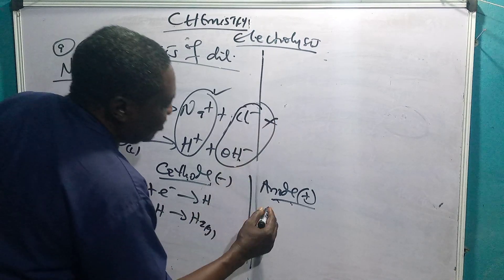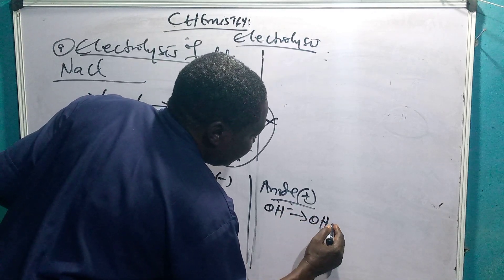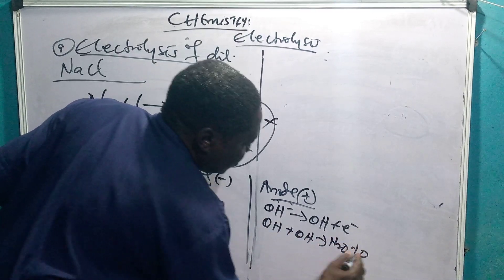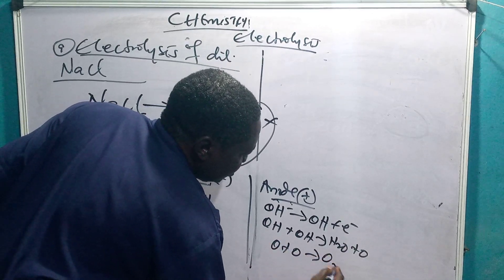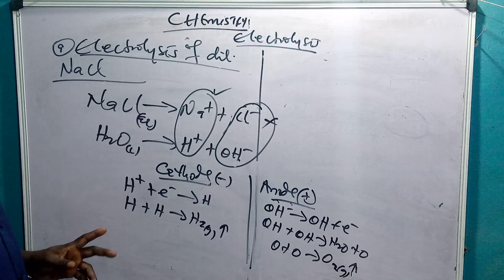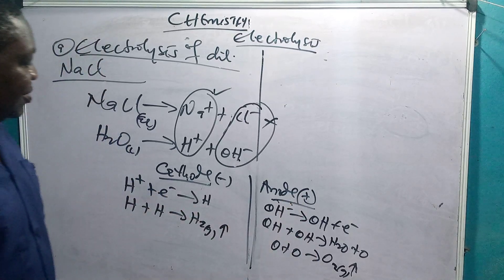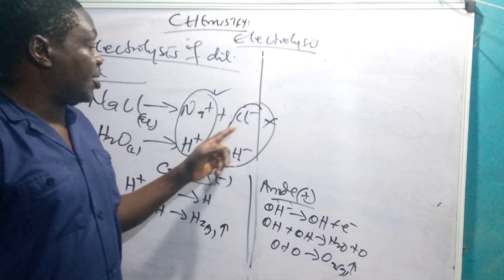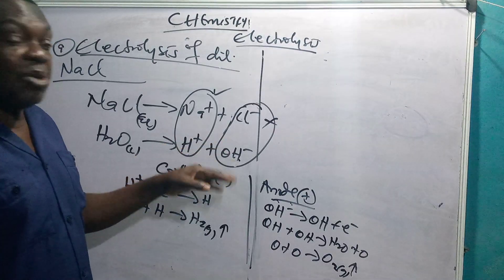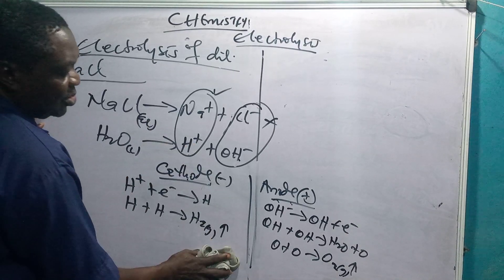Because the chloride ion concentration is insufficient, OH⁻ is discharged at the anode instead. OH⁻ loses its single electron and combines with another OH to form H₂O plus O, or combines in pairs to give O₂ gas, which is also given off. So in this dilute solution, hydrogen is discharged at the cathode and oxygen is discharged at the anode. The solution becomes more concentrated with sodium chloride as water is removed.